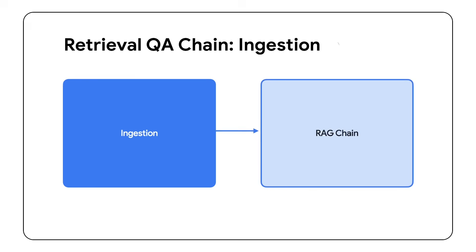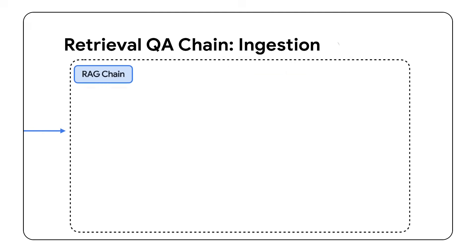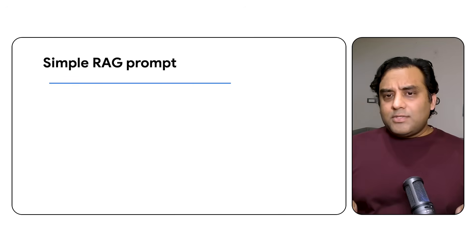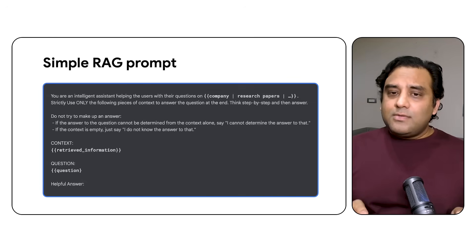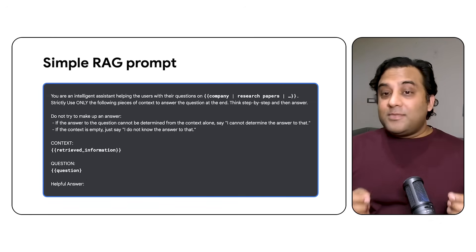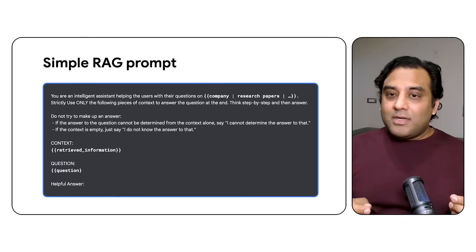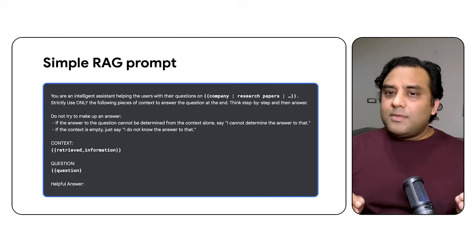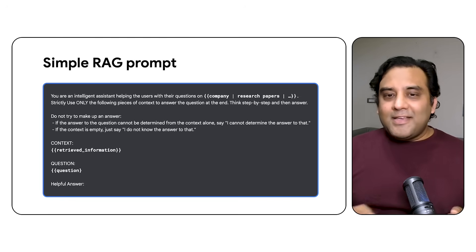Second is query time. For each question the user asks, you convert it into embeddings. Once the query is in vector form, you run a semantic similarity search between the query vector and the chunk vectors to filter out the most relevant chunks. Once those chunks are filtered, you use a prompt and ask the LLM to generate the final answer. LLMs are great at generating answers based on relevant context — finding the most crucial information from a large body of similar-looking text, like a needle in a haystack.